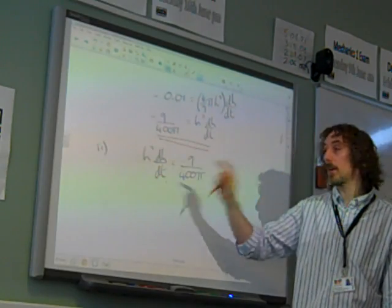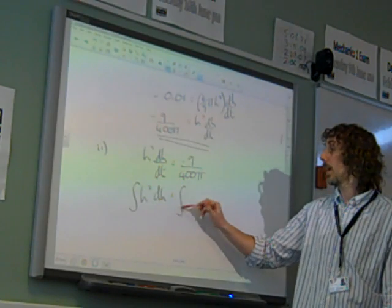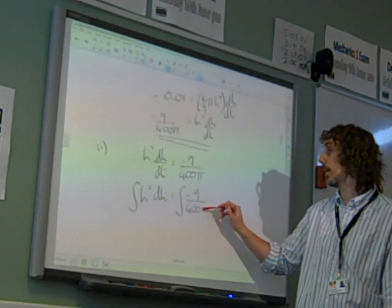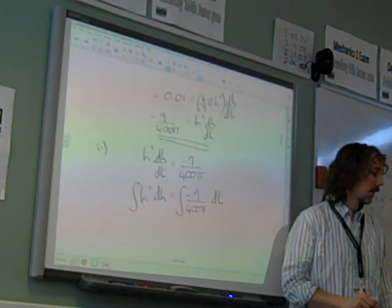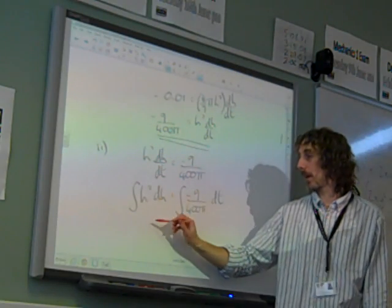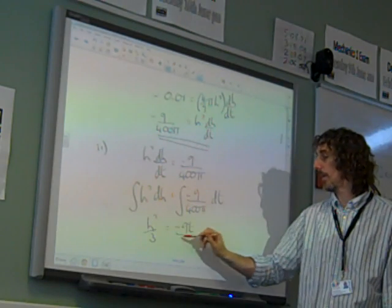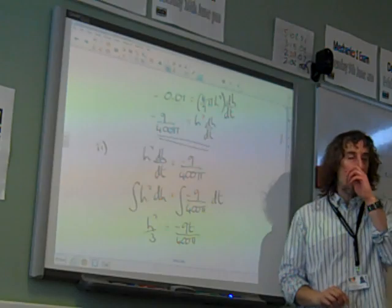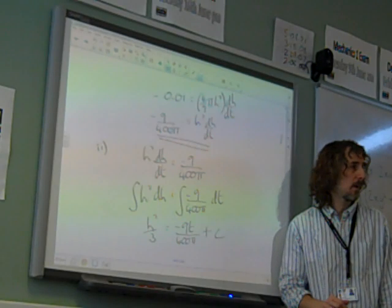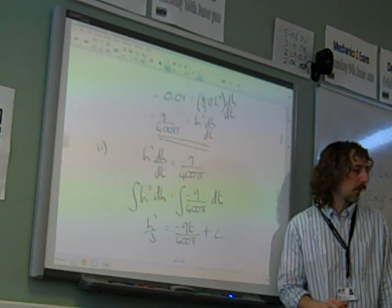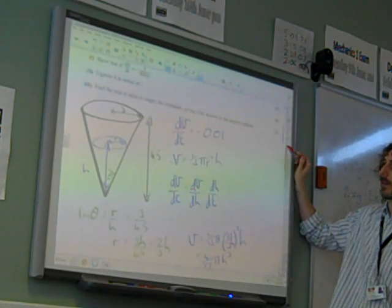So we're going to integrate both sides with respect to t, because t's on the bottom there. We get the integral of h squared dH is the integral of minus 9 over 400 pi with respect to t. And it's a nice straightforward integration. h squared would go to h cubed over 3. This would go to minus 9t over 400 pi. And we remember we must have the constant of integration in there as well, so we must put plus c at the end of it. And that's not done, because the question said, solve your equation to find h in terms of t.